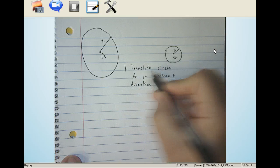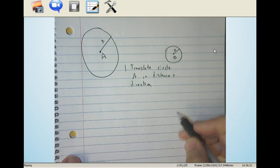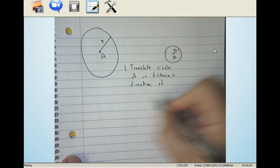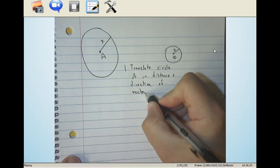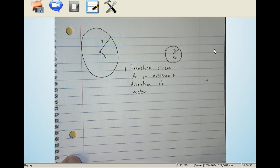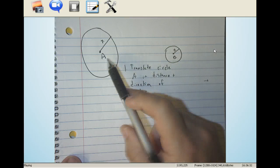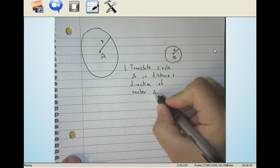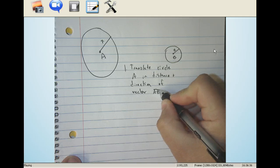Remember, our translation is done in a distance and direction of a vector. And the notation we use for vectors, we put a little line like that over whatever it is we're going to write. And here I'm going to call it vector AB, okay?